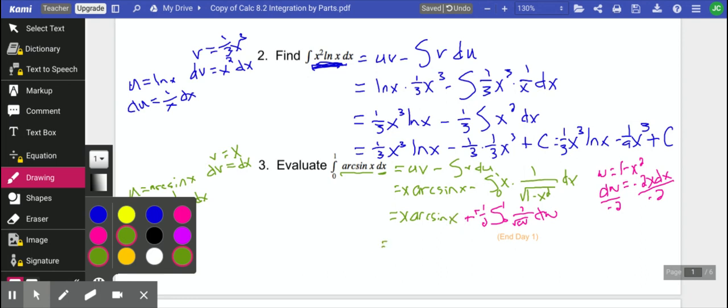So we'll just leave this as x arc sine x. So we have x arc sine x plus 1 half. This is w to the negative 1 half dw. So that's 1 half, and this is going to be w to the 1 half times 2. So those will cancel. And then we need to substitute back in. I'm running out of space here.